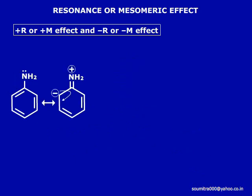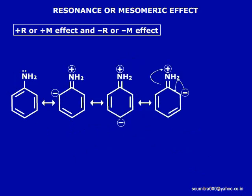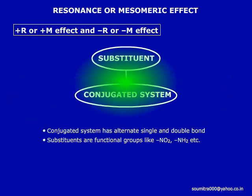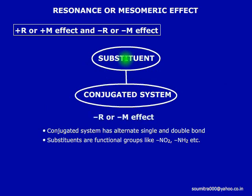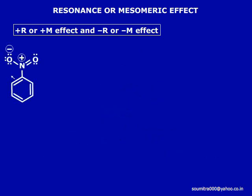When a substituent of a conjugated system decreases the electron density on the entire molecule by a delocalization mechanism, it is called the minus M or minus R effect. Substituent groups like NO2, carbonyl group, cyanide group, carboxylic group, and SO3H group fall under this category.